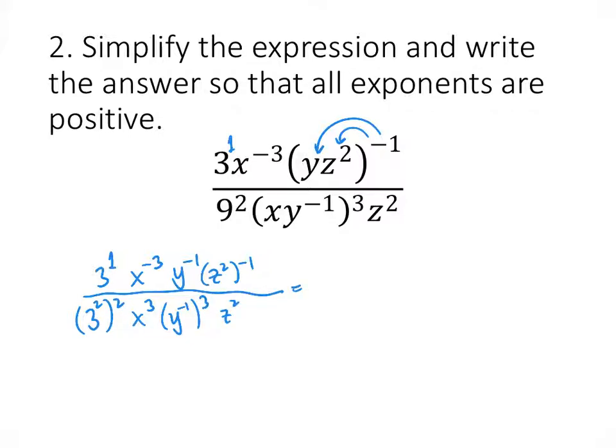So let's simplify those powers raised to powers. Remember that whenever we have x to the a and then that's raised to the b, we multiply the powers together, x to the a times b. So we have 3 to the first on top, x to the minus 3, y to the minus 1, z squared to the minus 1, that's z to the minus 2. On the bottom, 3 squared squared, that's 3 to the fourth, x cubed, y to the minus 1 to the third is y to the minus 3, and then z squared.